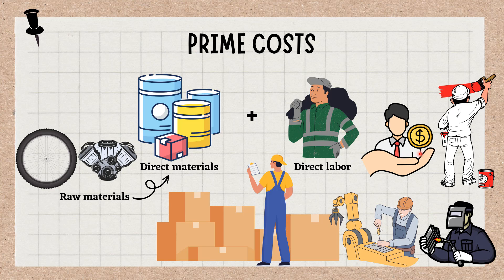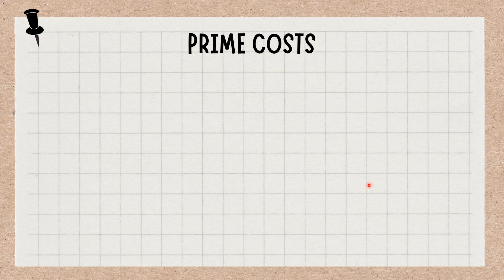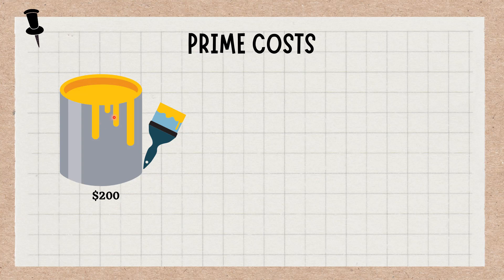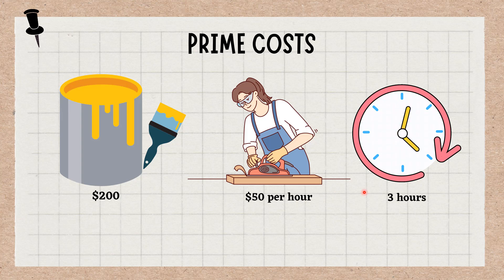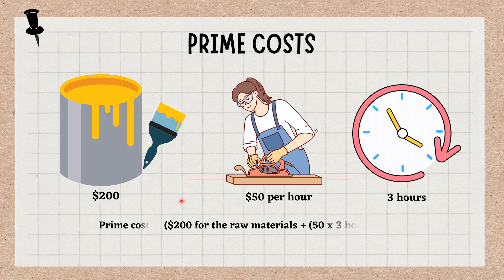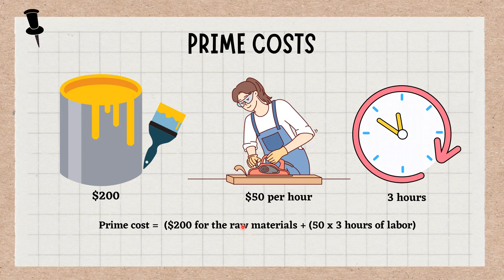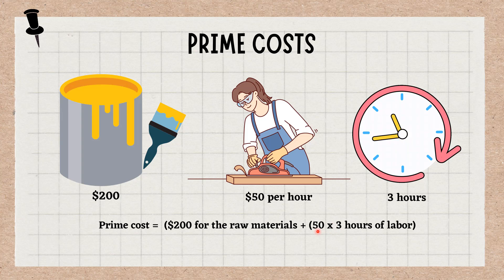Unlike conversion costs, prime costs do not include any indirect costs. Suppose that the cost of the raw materials — lumber, hardware, and paint — cost $200. The furniture maker charges $50 per hour for labor, and this project takes them 3 hours to complete. The prime cost to produce the table is $200 for the raw materials plus $150 in direct labor, which is $350.